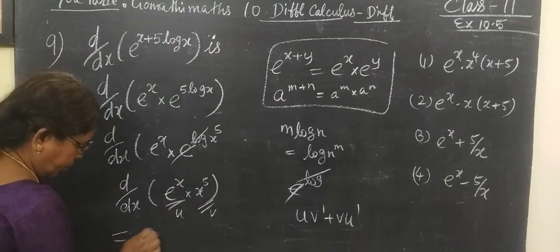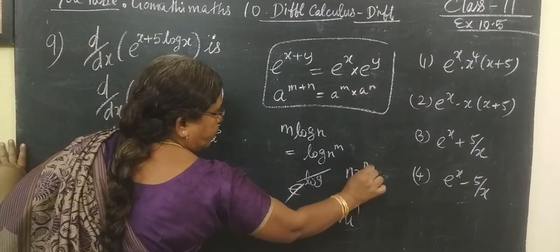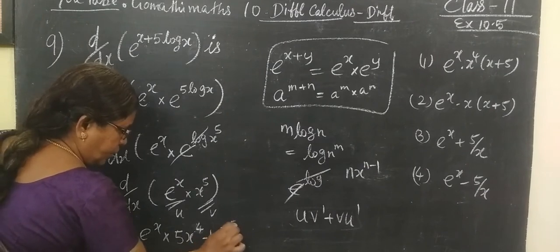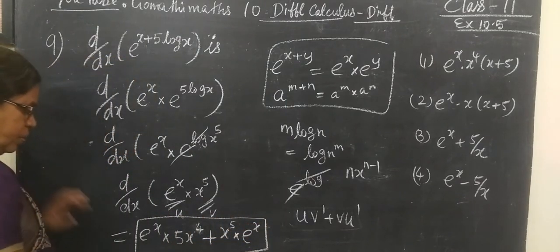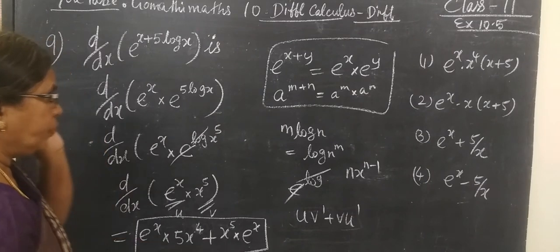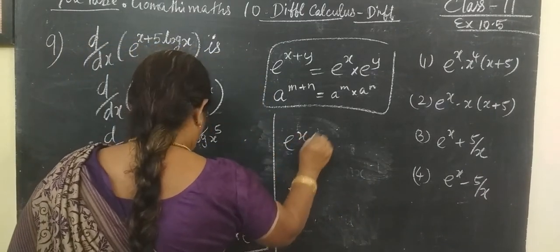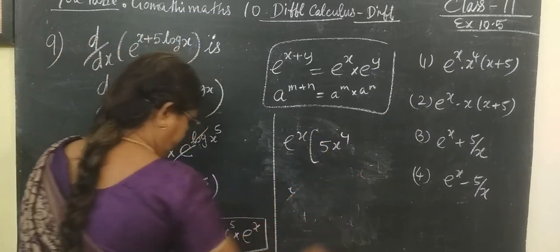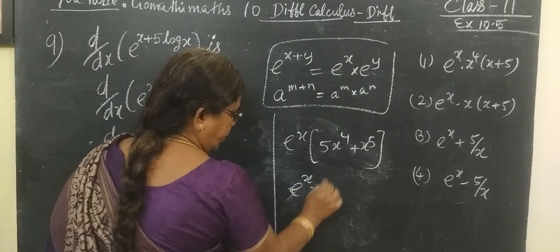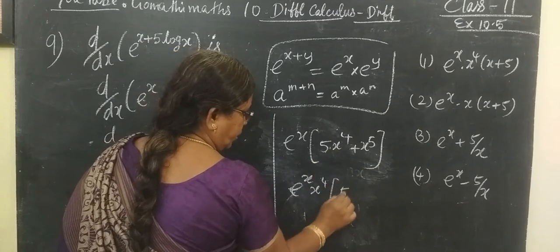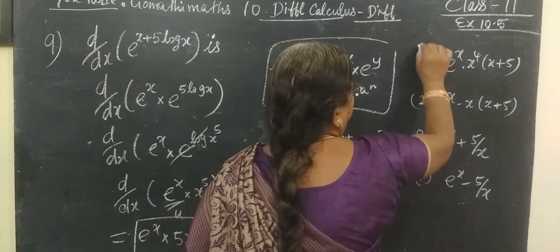Using the UV formula uv' plus vu': first function e^x times differentiation of x^π gives π·x^(π−1), plus second function x^π times differentiation of e^x gives e^x. Taking e^x common: e^x times (π·x^(π−1) plus x^π). Also, x^(π−1) is common, giving e^x · x^(π−1) · (π plus x). This is the correct answer.